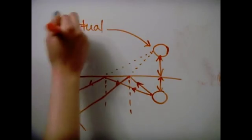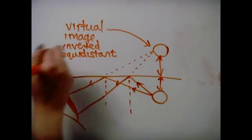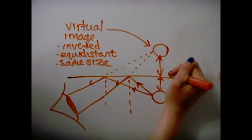This is how we see an object in a plane mirror. These are called virtual images and they are inverted equidistant images of the real object.